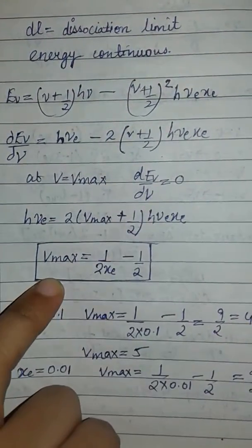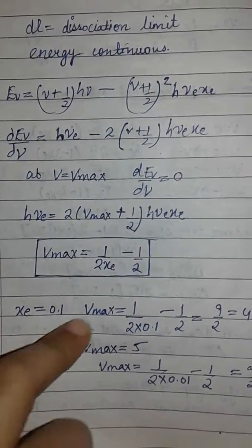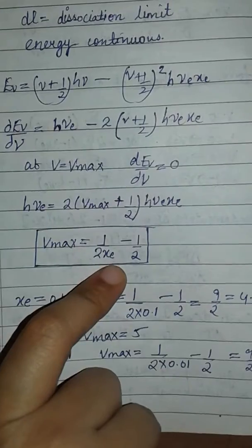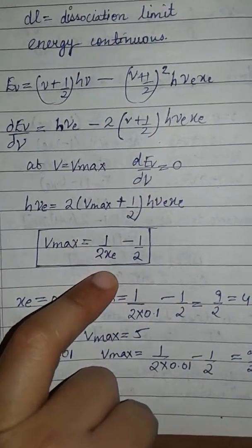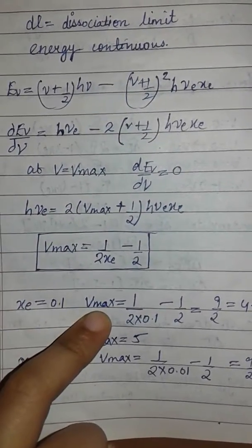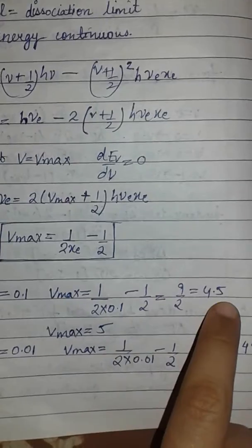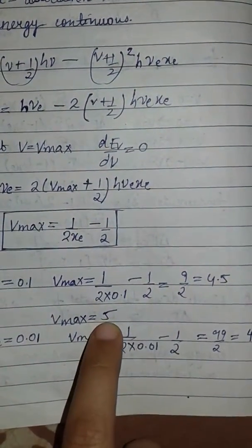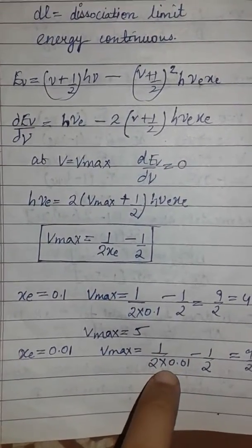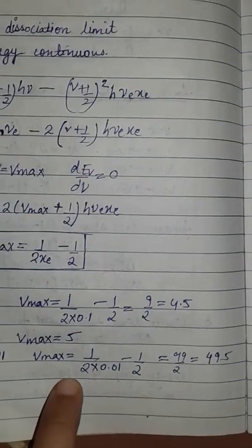Solving, V_max = 1/(2X_e) minus 1/2. This is the maximum vibrational quantum number. For X_e = 0.1: V_max = 1/(2×0.1) minus 1/2 ≈ 4.5, rounded to 5. For X_e = 0.01: V_max = 1/(2×0.01) minus 1/2 ≈ 49.5, rounded to 50.